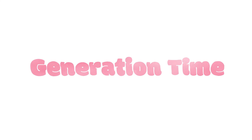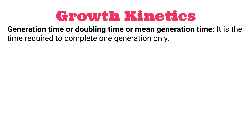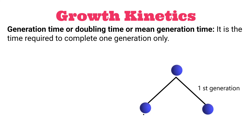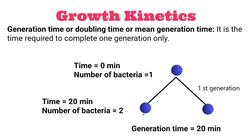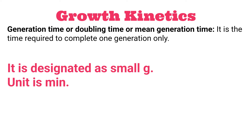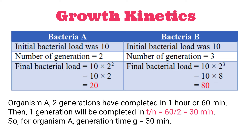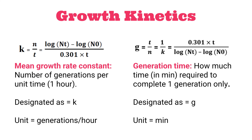Another way to calculate the rate or speed of bacterial growth is called the generation time, or doubling time, or mean generation time. It is the time required to complete one generation only — meaning the final bacterial number will be exactly double compared to the initial number. It is designated as small g and the unit is minutes. For example, from the table: organism A completed two generations in one hour (60 minutes), so one generation is completed in 60 / 2 = 30 minutes, giving a generation time of 30 minutes. Since k is n/t and g is t/n, we can say g = 1/k.